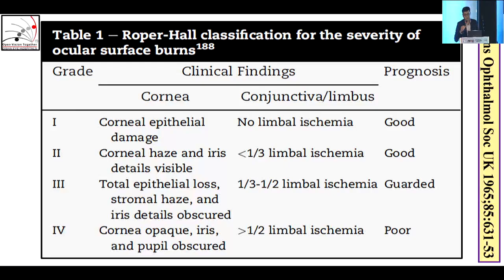The Roper Hall classification grades severity of ocular burns into four grades based on corneal findings and limbal involvement. It assesses how much of the epithelial area is damaged and the clock hours of limbus affected. Grade four is where the cornea is totally opaque with no view of the iris and pupil, and more than half of the limbal clock hours are involved.